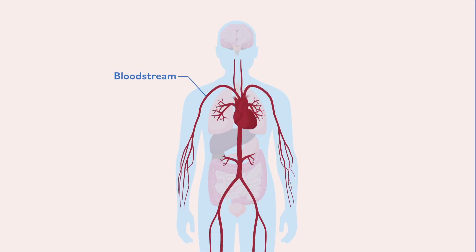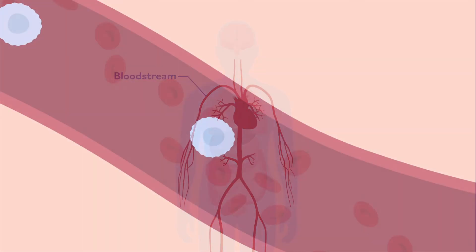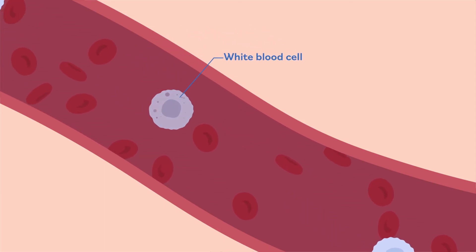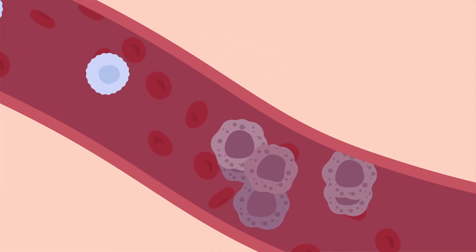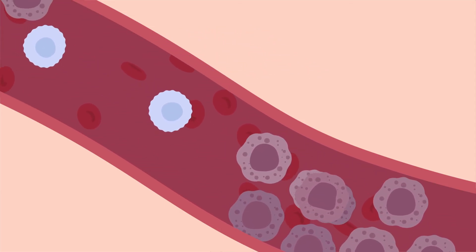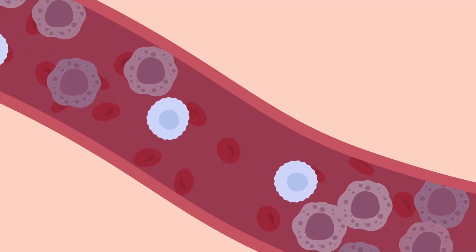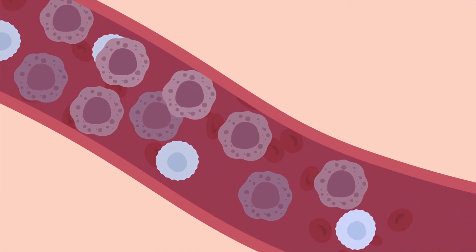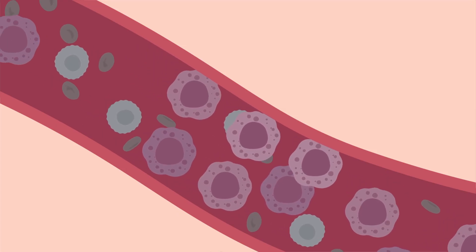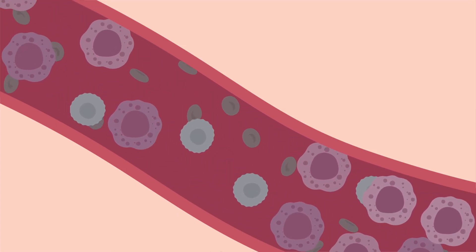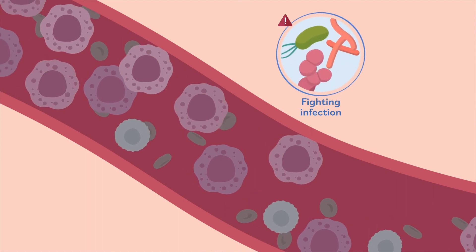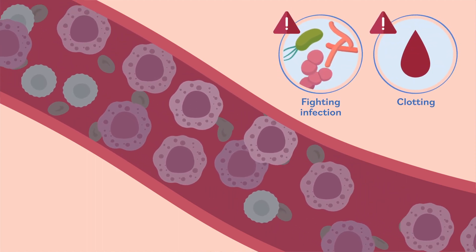Some cancers, like blood cancers, do not form tumors. Blood cancer starts when a blood cell, such as a white blood cell, starts to divide and grow out of control. Blood cancer cells build up in the bloodstream and damage healthy blood cells, preventing them from working as they should — such as by fighting infection or clotting to stop bleeding.